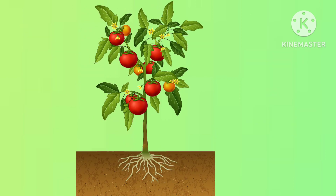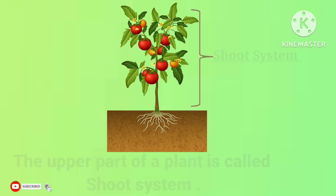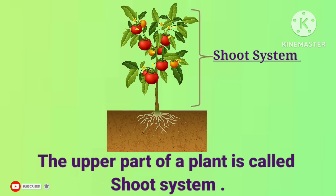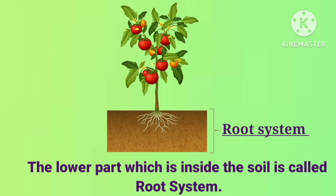Kids, do you know all plants have two basic parts? Those are the shoot system and root system. The upper part of a plant is called the shoot system and the lower part, which is inside the soil, is called the root system.